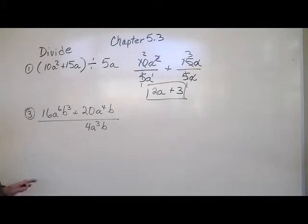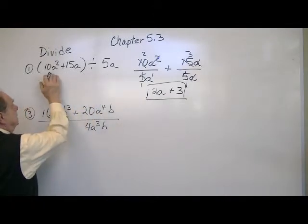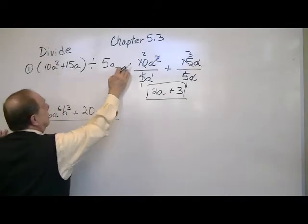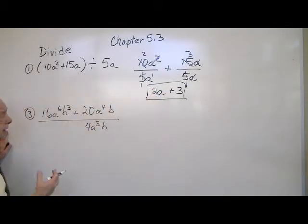So there is your answer. Once again the key is if you have a binomial divided by a binomial, put each term over your common division and cancel and you get an answer.